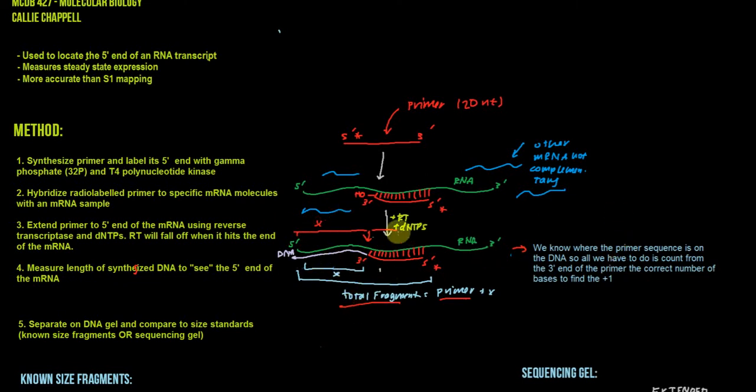To the total distance of the fragment, or this distance that I've denoted here as x, to figure out the correct number of bases which the size of the total fragment will tell us to find the plus 1 or the 5' end of this RNA. And the reason why I'm calling it the plus 1, remember, is if we have DNA, the beginning of transcription is the plus 1. So this mRNA would start here, right, where this is the 5' end. That's why I'm saying the plus 1 here.